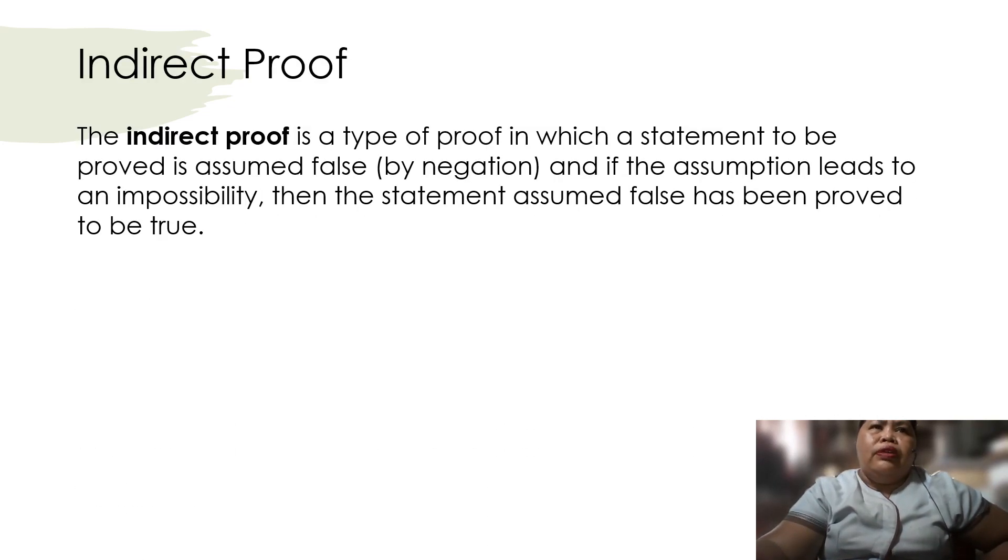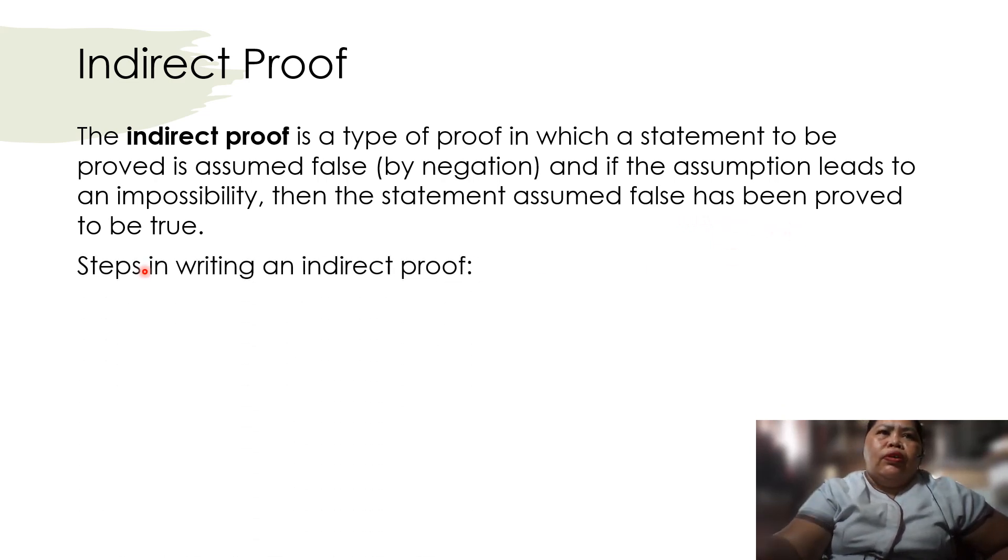So we have indirect proof. An indirect proof is a type of proof in which a statement to be proved is assumed false by negation. And if the assumption leads to an impossibility, then the statement assumed false has been proved to be true.